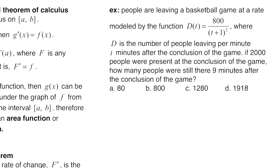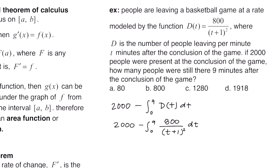We're going to set this up as 2,000 minus the integral from 0 to 9, because it's asking for how many people there are after 9 minutes. We integrate this rate from 0 to 9, indicating 9 minutes after the game ended, which gives us the total number of people who left from 0 to 9 minutes. Then we subtract that from 2,000.